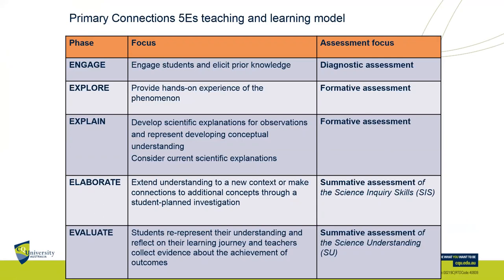Now I want to point out two things on this chart. The five E's are clearly aligned, but going down the right-hand side are the key things: formative assessment comes in at the explore and explain stage; summative assessment comes in at the elaborate and evaluate stage. A lot of people are surprised to see summative assessment of science inquiry skills at the elaborate stage — but that is indeed what happens there.